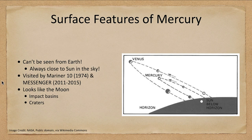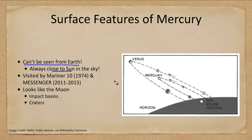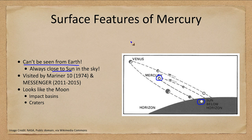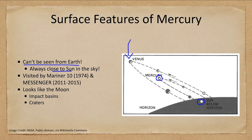How about the surface features of Mercury? We can't see the surface features from Earth. We can see Mercury, but we cannot see the surface features because Mercury is always close to the Sun in the sky — at best a little bit above the horizon when the Sun has set, or just before the Sun rises, bathed in the glow of morning dawn. Venus, being a little further away and a lot brighter, is easier to see. But Mercury is very difficult to observe when you point a telescope that low in the sky — the sky is getting brighter and you're looking through a lot of atmosphere.